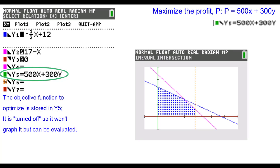To maximize the profit, we put it in Y5. Notice it is stored there, but it's turned off, so it won't graph but can be evaluated.